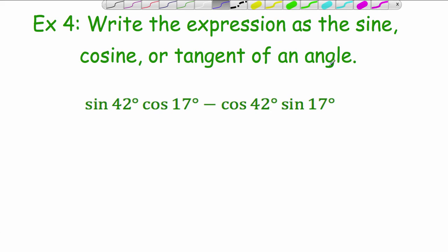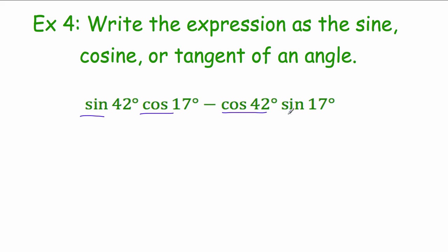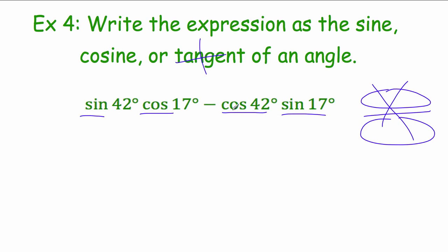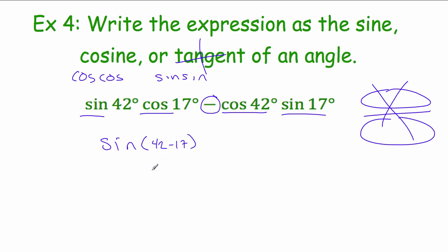Here's a quick one: write the expression as the sine, cosine, or tangent of a single angle. Since there's no fraction it's not tangent, and since the formula has sine·cosine and cosine·sine (not cosine·cosine minus sine·sine), it's not cosine — so it must be sine. The sign in the middle stayed the same, so it's subtraction: sine(42)·cosine(17) minus cosine(42)·sine(17) equals sine(42 minus 17) = sine(25).